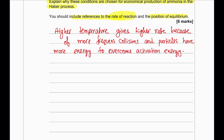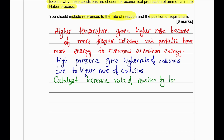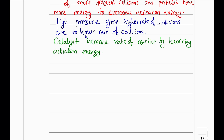In terms of equilibrium: higher temperature shifts the equilibrium to the left because the forward reaction is exothermic and the backward reaction is endothermic — endothermic reactions are favored at higher temperatures. Higher pressure shifts the equilibrium to the right because there are more molecules on the left-hand side and fewer on the right, so high pressure favors the smaller volume side. The use of a catalyst has no effect on the equilibrium.